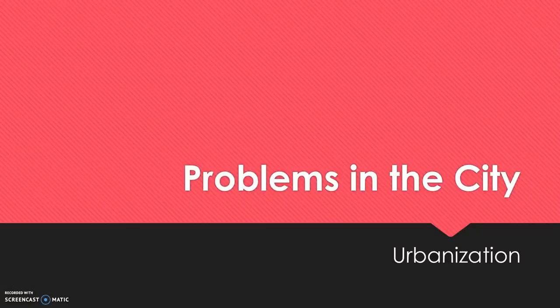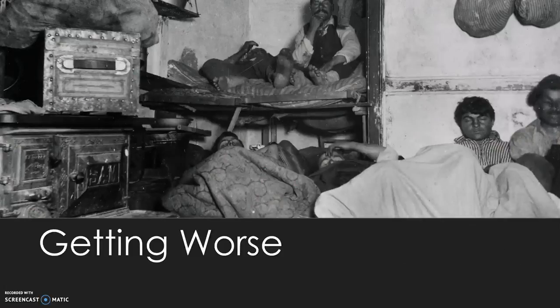Let's look at some of these issues. A lot of them are going to really stem from that overcrowding that comes with urbanization. A lot of immigrants, when they come to the United States very poor, they're forced to live in complexes called tenements. Tenements are low-cost, multifamily housing designed to squeeze in as many people as possible, used in very densely populated areas.